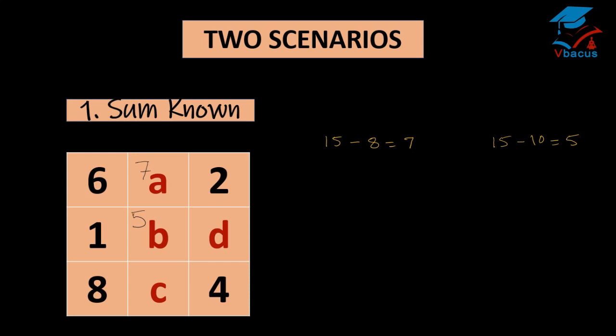Now find the value of C. That is 15 minus 12. 8 plus 4, that is 12. 15 minus 12 is 3. Now find the value of D. That is 15 minus 6. 2 plus 4, that is 6. So 15 minus 6 is 9.